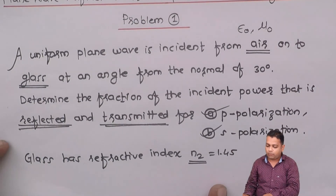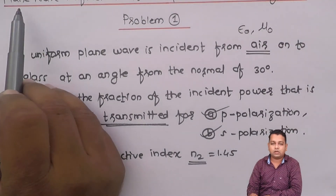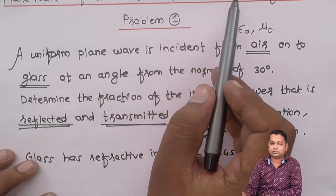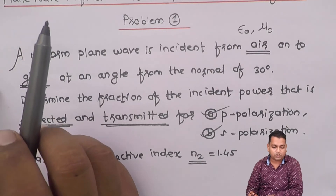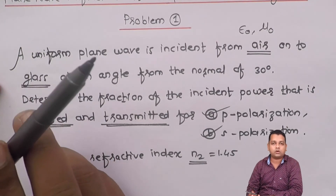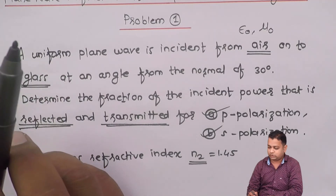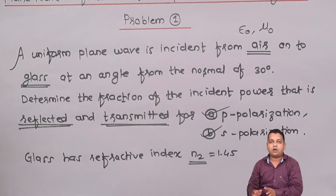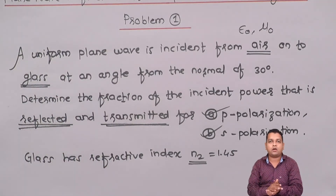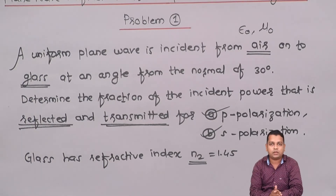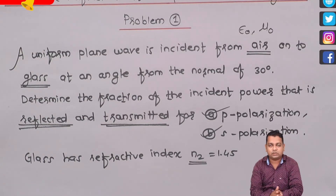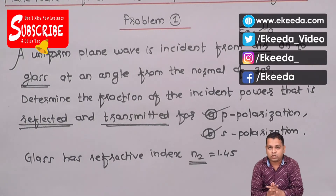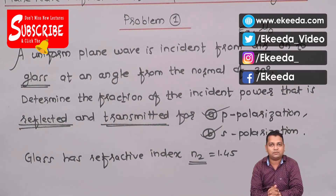With this problem, I hope the concept of plane wave reflection at oblique incidence is very clear. In the next video we shall take up the next topic — total reflection and total transmission of obliquely incident waves — where either all power is reflected or all power is transmitted. For more information on electromagnetic field theory, you can subscribe to the Ekida channel. Thank you.